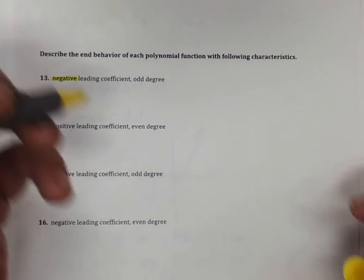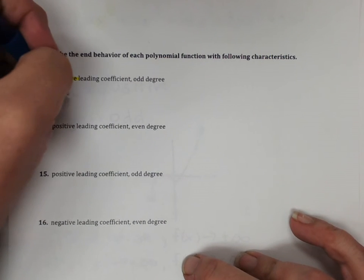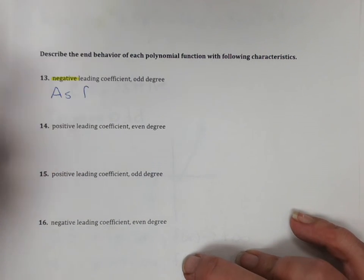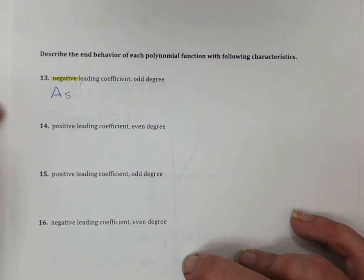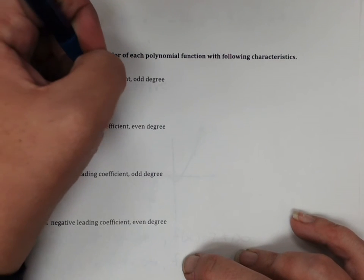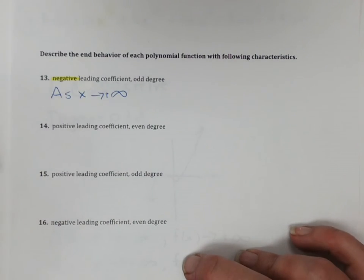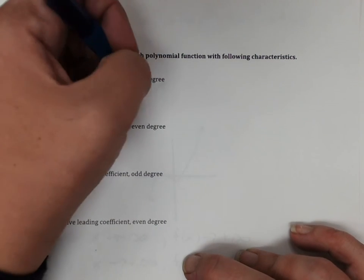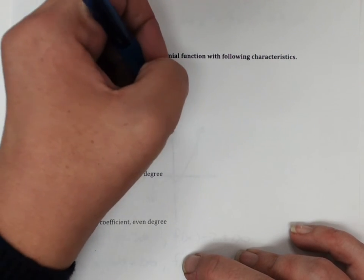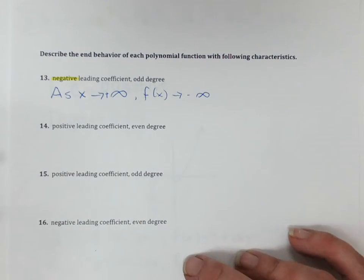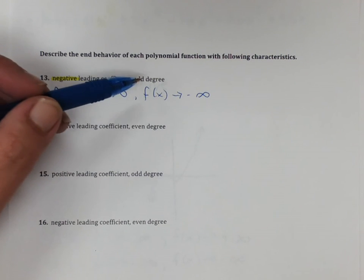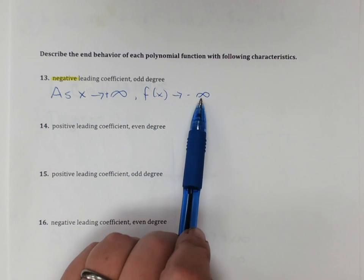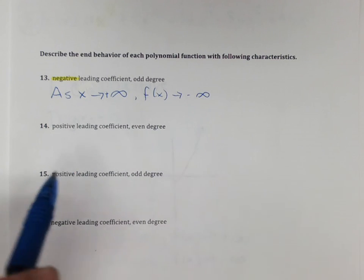Negative tells me that as x is approaching positive infinity. Since it's negative, that tells me that f of x is approaching negative infinity, right? We get that first piece of end behavior from the positive or negative leading coefficient. Now, this is an odd degree function, so its end behavior has to be opposite on each end.